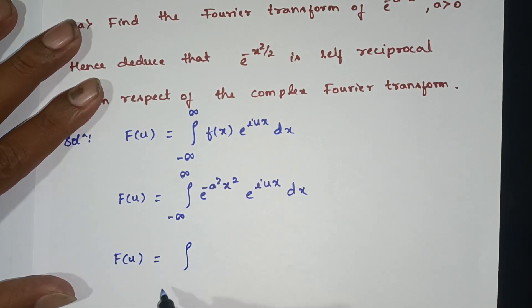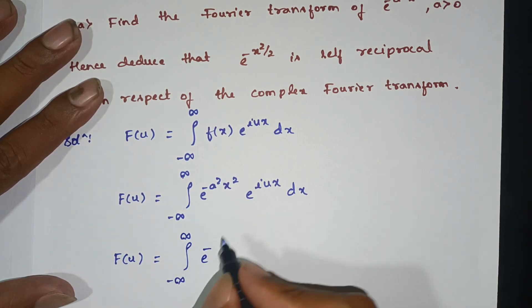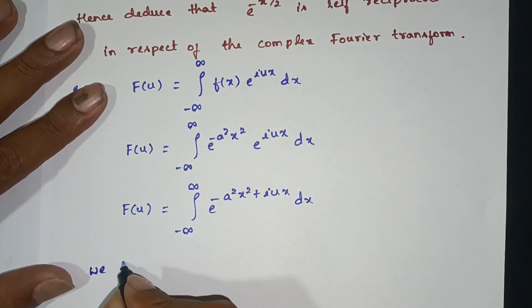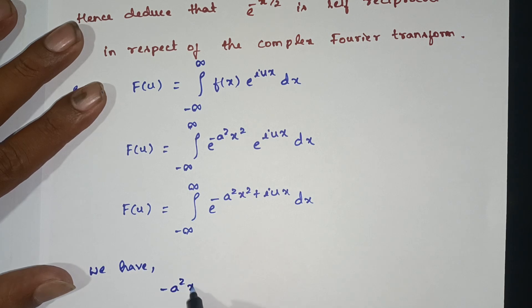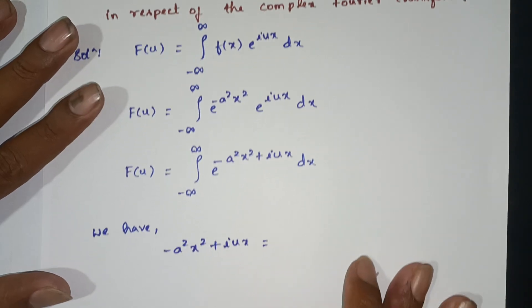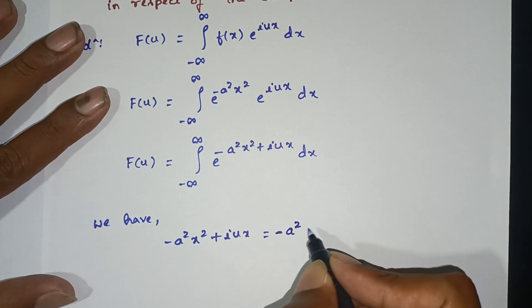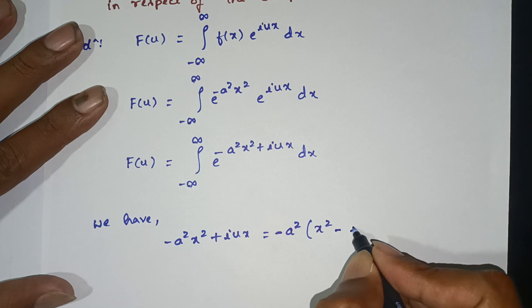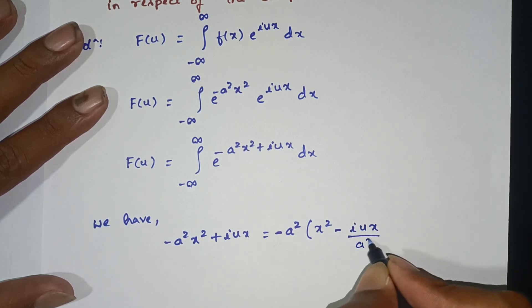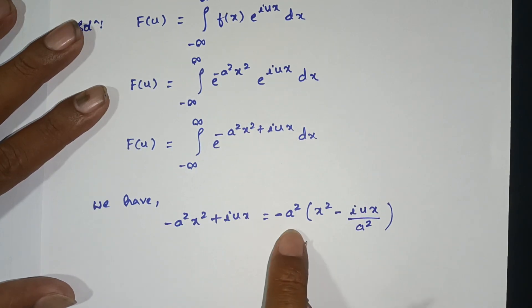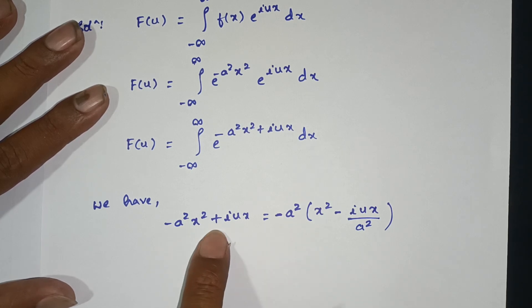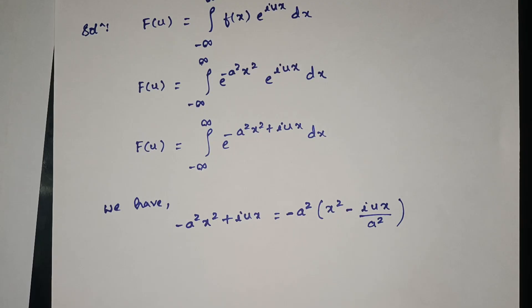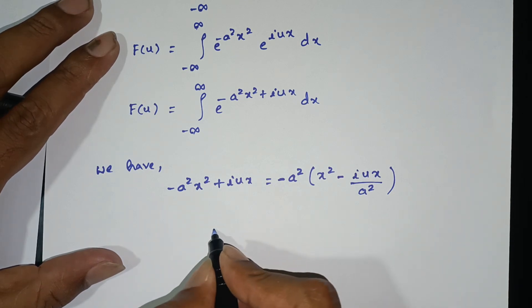F of u is equal to integral of e power minus a square x square plus iux dx. We combine the exponent: minus a square x square plus iux. Multiply: minus into plus is minus. We then work with minus a square x square plus iux.